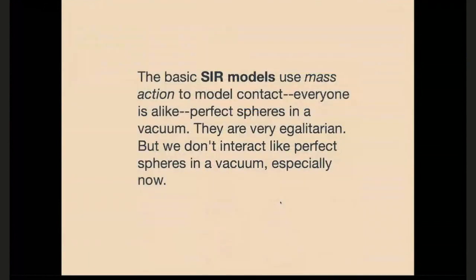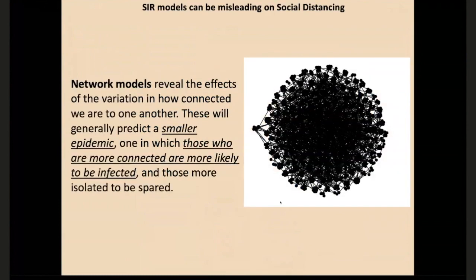The SIR models have a mass action assumption — you basically assume that everyone is bumping into everyone else like perfect spheres in a vacuum. We didn't act like that even before social distancing. That assumption is fine for very short-term predictions, but it gets problematic as you ask different questions. Network models are useful in looking at how the way we're connected affects an epidemic. In general, a network model is going to predict a smaller epidemic — a lot smaller. If you use an SIR model to predict how many people are going to be infected, you'd get about 60 percent of the population. That's just not right. These network models might say 10 to 40 percent of the population — a very big difference.